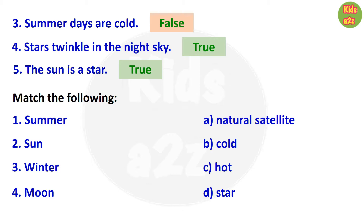For the next question, kids need to match two columns. They need to match summer with hot, sun with star, winter with cold, and moon with natural satellite.